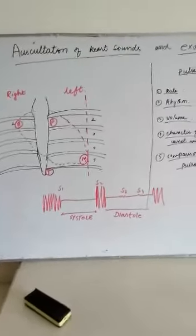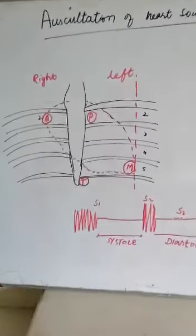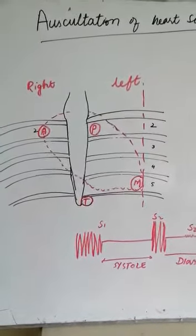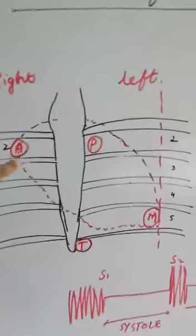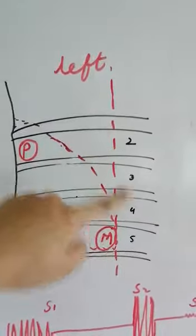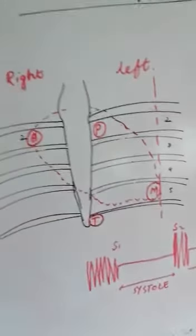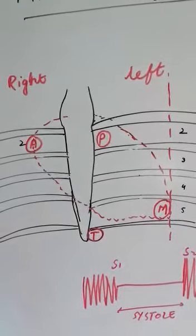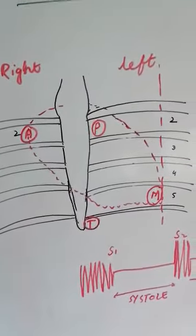Today's practical is about auscultation of heart sounds and examination of pulse. First, we will do the auscultation of heart sounds. This diagram shows the precordium — the area of the chest overlying the heart. You can see the sternum, the ribs, and the intercostal spaces labeled 2, 3, 4, and 5. For auscultation of heart sounds, the first step is localization of the intercostal spaces, because there are special areas in particular intercostal spaces where we auscultate.